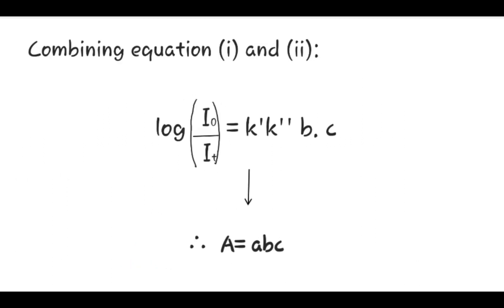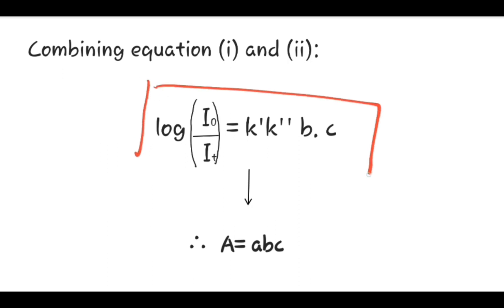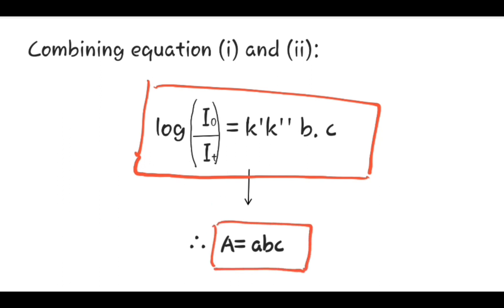Now, combining equation 1 and equation 2 — where equation 1 is Lambert's Law and equation 2 is Beer's Law — and taking the logarithm of both equations, we get: log I₀ upon I_T is equal to K' double dash into B into C. This equation can be expressed as A is equal to a, B, and C.